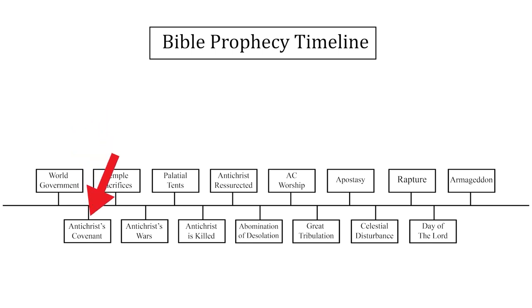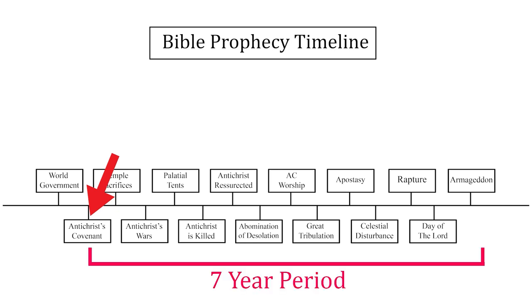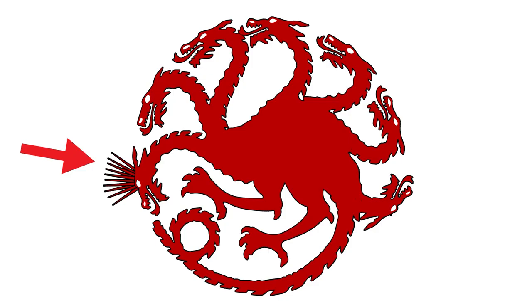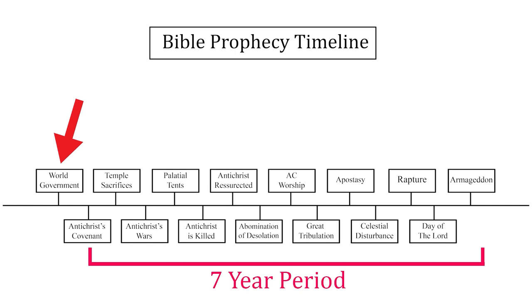You may have noticed that the next event on the timeline is the Antichrist Covenant, which most Bible prophecy students will know is the very first event in the 70th week of Daniel. I'm going to argue that a world government — specifically the seventh head of the seven-headed, ten-horned beast of Daniel 7, Revelation 13 and 17 — will exist before the seven-year period begins.